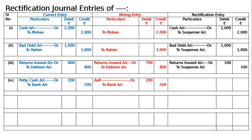Hence Petty Cash will come in and Asif will go out. The rectification entry is: Petty Cash account debited to Asif account. Due to the debit, Petty Cash comes in, and the credit to Asif cancels out Asif's earlier debit, giving us Petty Cash to Bank — which is the correct entry. Being amount paid to Asif by check for petty expenses was debited to his account, now rectified.